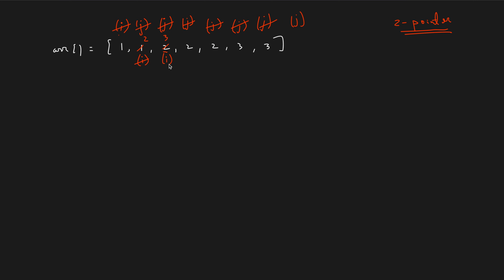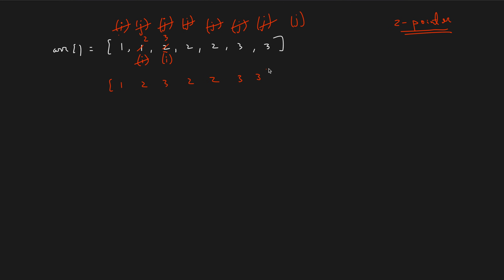At this point i is standing at the second index. We have made sure the modified array looks like: 1, 2, 3, followed by the remaining elements which don't matter. What matters is the first 3 elements. Since i is at index 2, we simply return i + 1 to get the number of unique elements, and that's our answer.